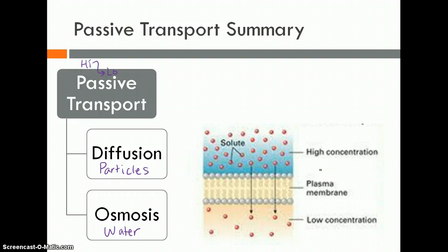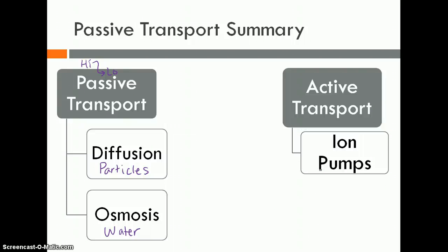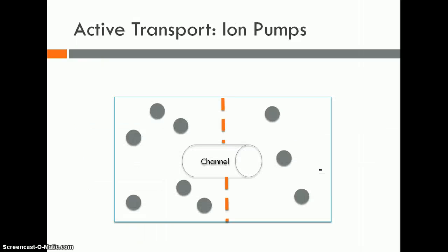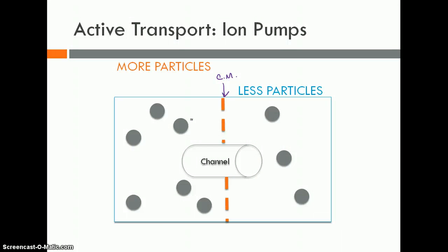Now let's compare passive transport to the opposite — active transport — by looking at ion pumps. Here's our drawing again with the cell membrane in the middle. On one side there are more particles; on the other, there are less. This time, the big particles can't fit through the cell membrane on their own, so we have specific channels — these openings, these passageways — for the larger particles, and indeed they can fit through.